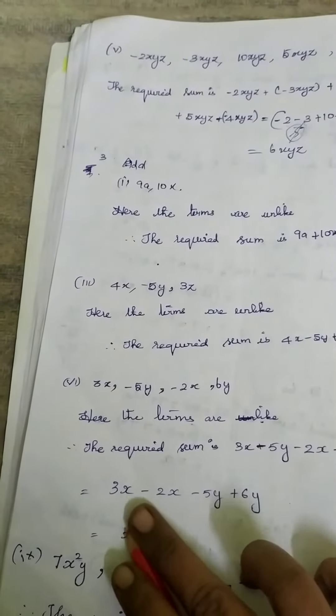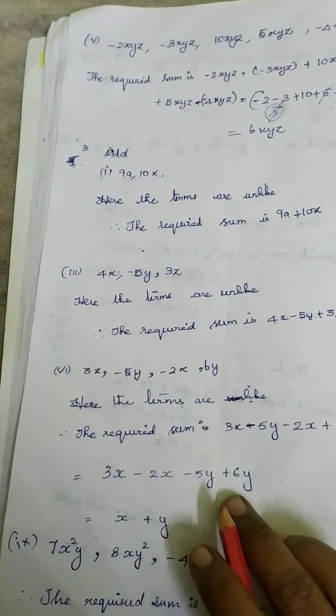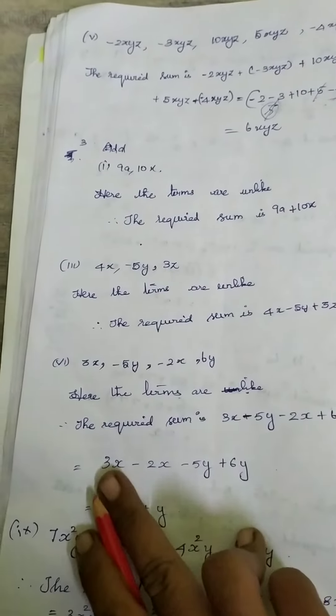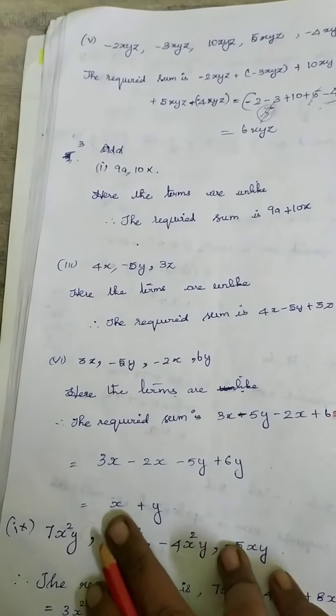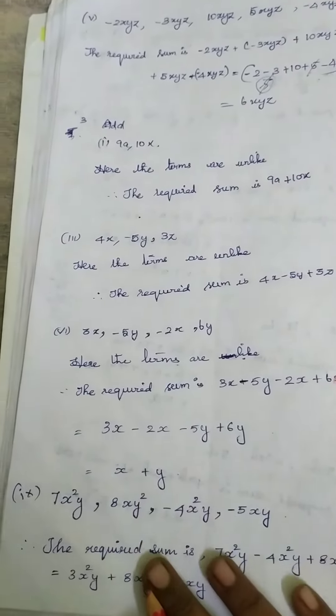Then we will be aligning the terms: 3X minus 2X, then minus 5Y plus 6Y. Now 3 minus 2 is 1, so 1X. 6 minus 5 is 1, so 1Y. Your answer is X plus Y.